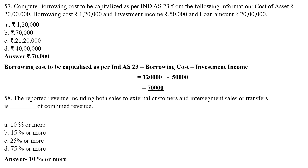Next MCQ: The reported revenue includes both sales to external customers and intersegment sales or transfers — this is dash of combined revenue. Option A: 10% or more, Option B: 15% or more, Option C: 25% or more, Option D: 75% or more. The correct answer is Option A — 10% or more. Reported revenue including both sales to external customers and intersegment sales or transfers is 10% or more of combined revenue.